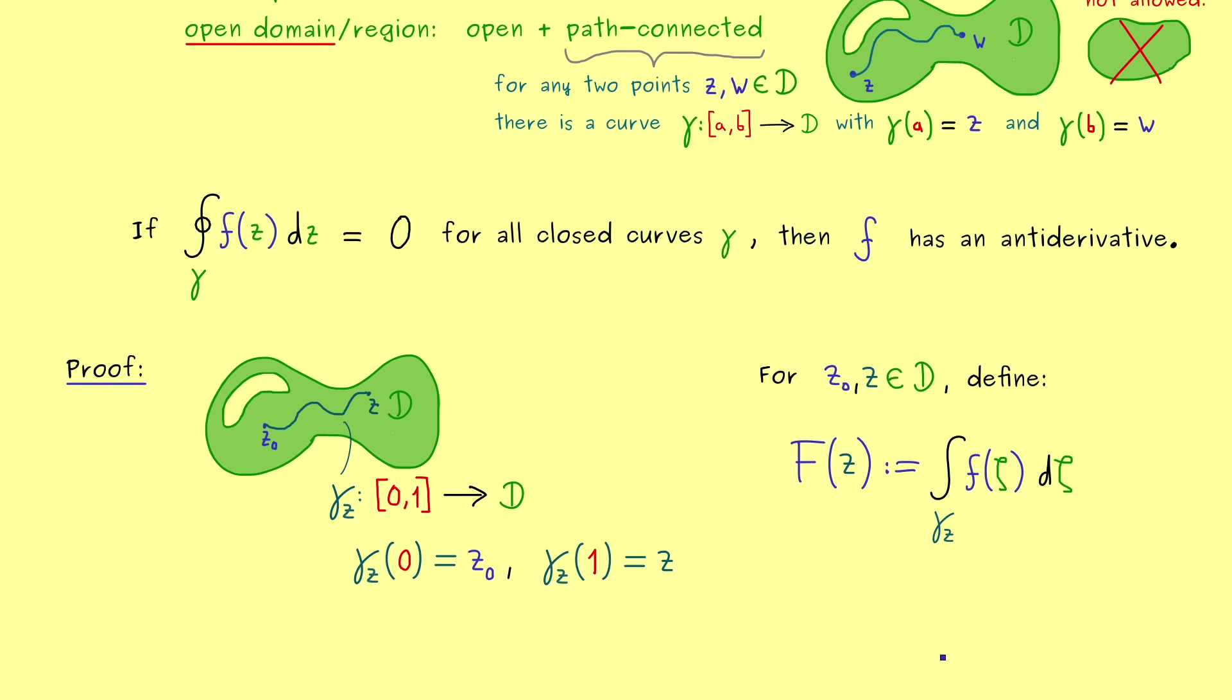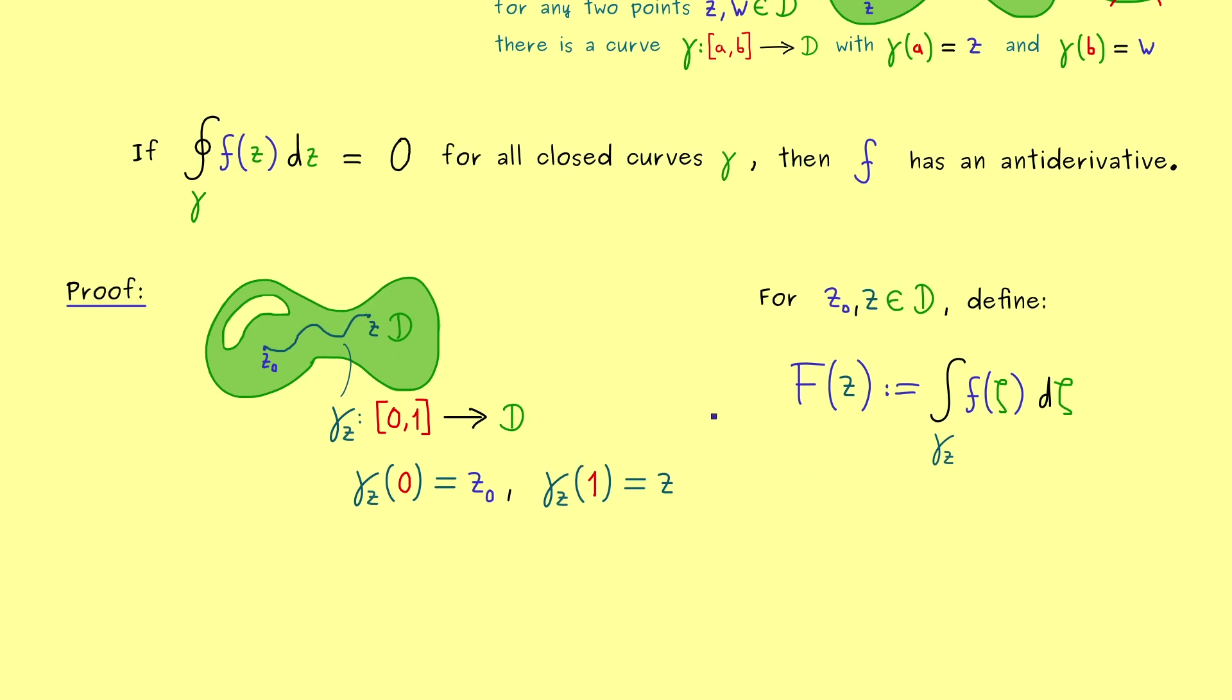Moreover, what you can show here is that the value F does not depend on the exact curve gamma_z we choose between z₀ and z. More concretely, if you choose another curve from z₀ to z, you get out the same value F. Indeed, how to show this should be clear when you look at the picture here.